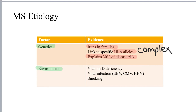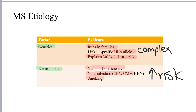As for environmental factors, there are some elements that have been shown to increase the risk of developing MS. These are vitamin D deficiency, viral infection with viruses such as Epstein-Barr virus and cytomegalovirus, and a prior history of smoking. All of these factors increase risk for developing MS.